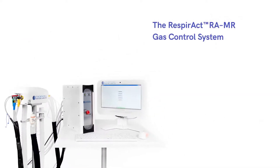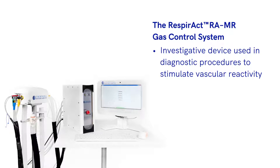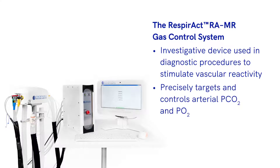The Respiract, also known as RAMR, is a blood gas control system and investigative device used in diagnostic procedures to stimulate vascular reactivity. Respiract is designed to precisely target and control arterial partial pressure of carbon dioxide and partial pressure of oxygen in spontaneously breathing subjects, and is able to work in an MR environment.